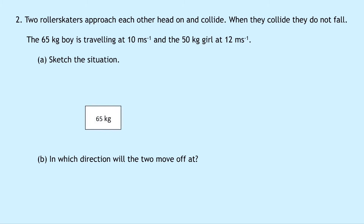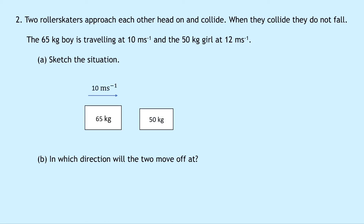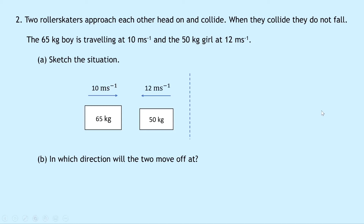The boy at 65 kilograms is assumed to be traveling to the right at 10 meters per second, and the girl at 50 kilograms is moving to the left at 12 meters per second. After the collision the two bodies lock together and move off with the same speed v, which we don't know. We also don't yet know which direction they'll move off in.